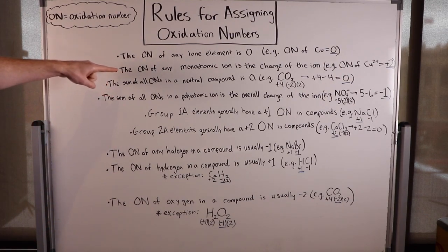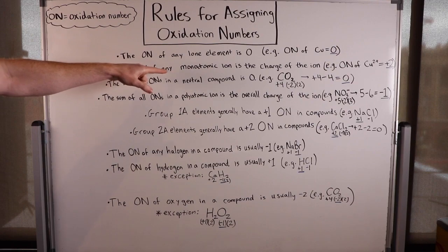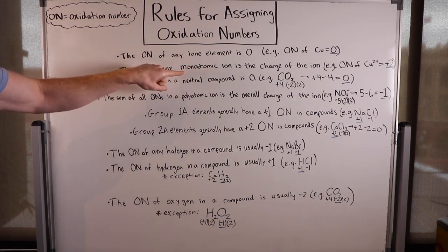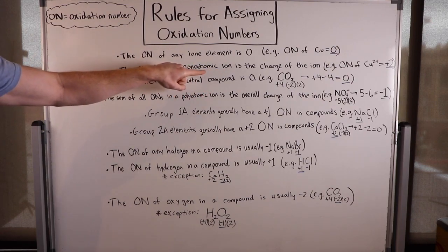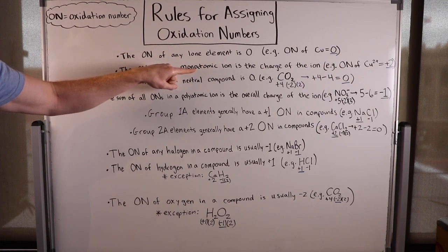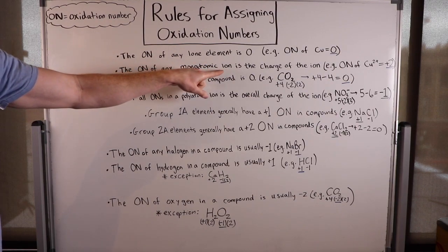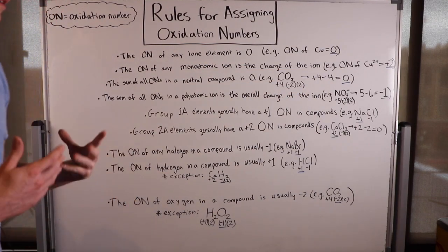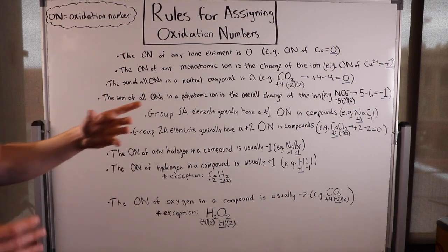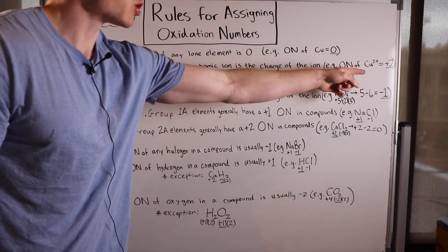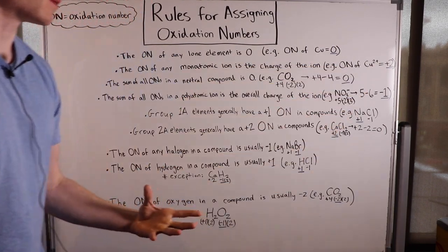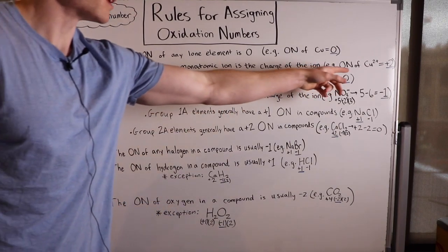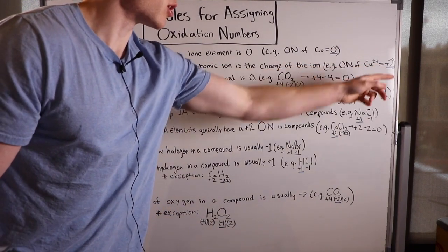The second rule says the oxidation number of any monatomic ion — so a single atom ion, a single charged atom — is the charge of the ion. It sounds tricky, but it's really just saying if we've got a charged lone copper atom with a plus two charge, the oxidation number is the charge, plus two.